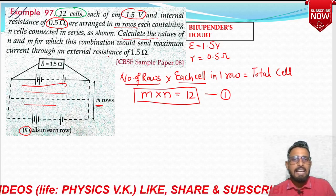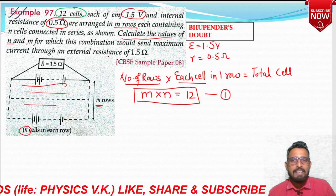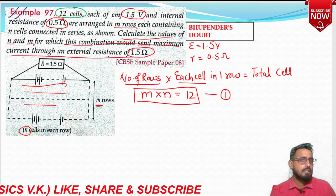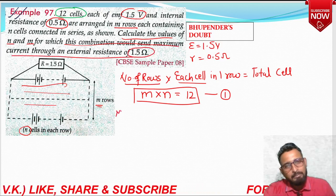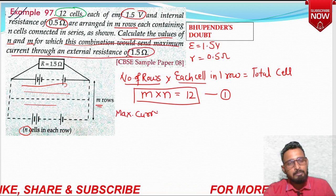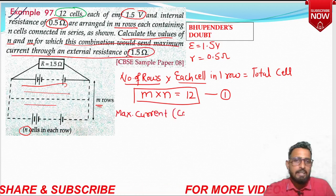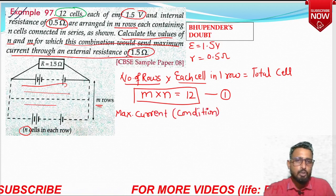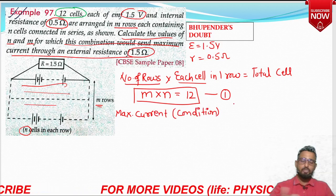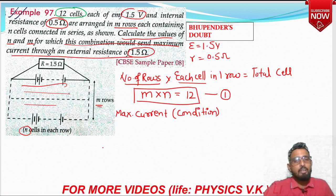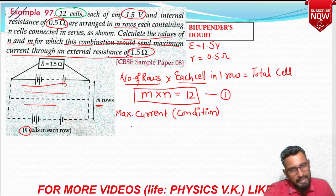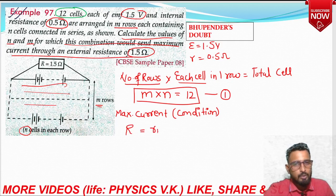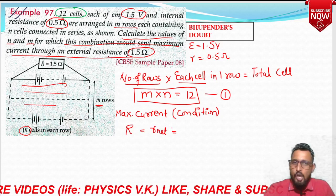For maximum current in mixed grouping, external resistance must equal net internal resistance. We studied this condition in the mix grouping lecture on my YouTube channel. Net internal resistance in mixed grouping equals (N × r) / M, where r is the internal resistance of each cell.